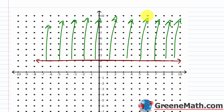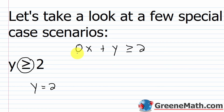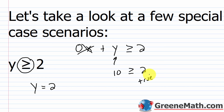For example, with x equals 5 and y equals 10, we can write 0x plus y is greater than or equal to 2. Whatever we plug in for x goes away, leaving y equals 10, and 10 is greater than or equal to 2 — that's true. So you can see how that's a very easy scenario.